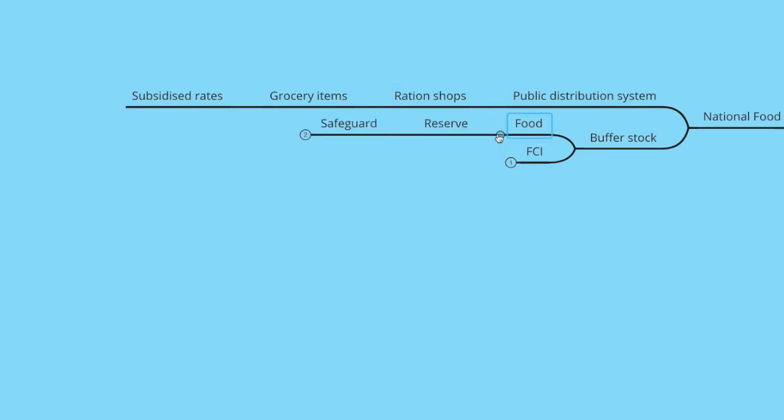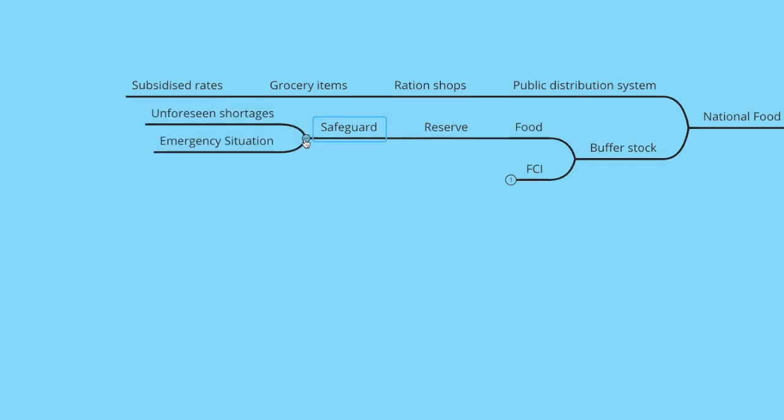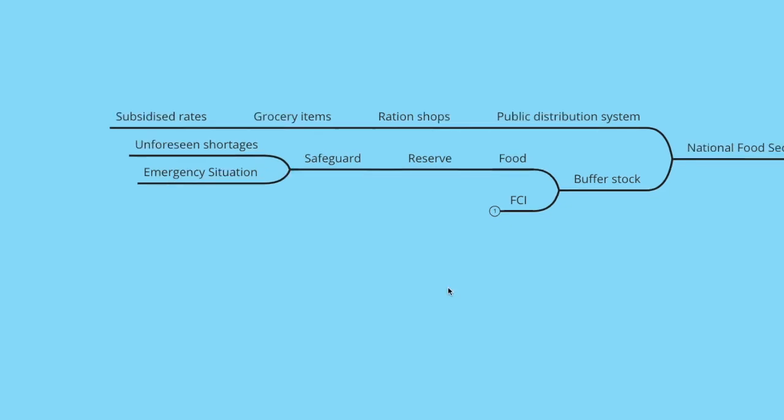The second part is buffer stock — food that is kept as reserve nationally to safeguard against unforeseen shortages and emergency situations. The entire Public Distribution System is looked after by the FCI, that is the Food Corporation of India. With so much variety, no doubt India is called an agricultural country. That's it for today — see you next time, take care.